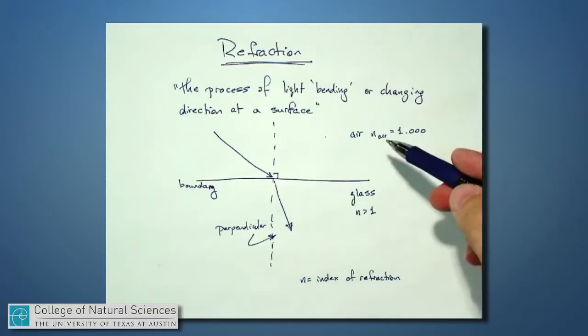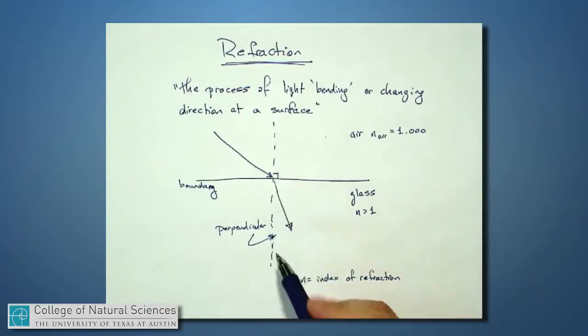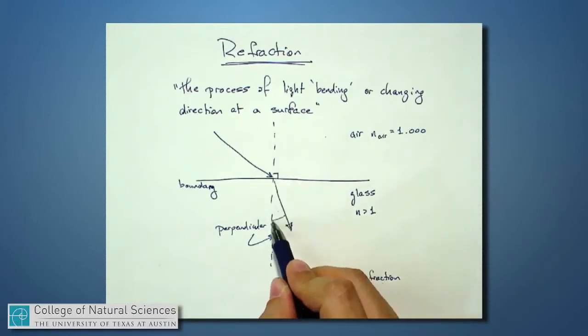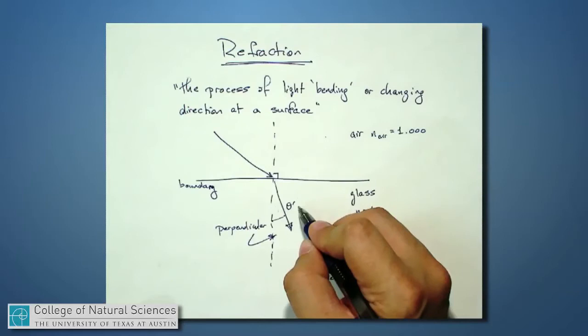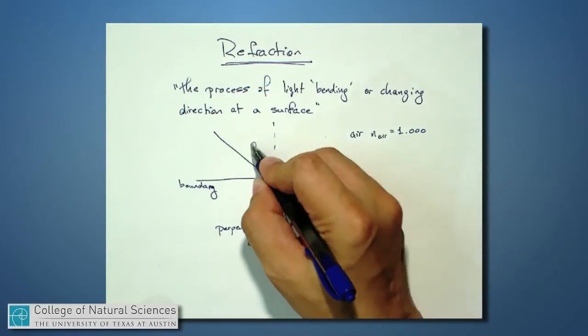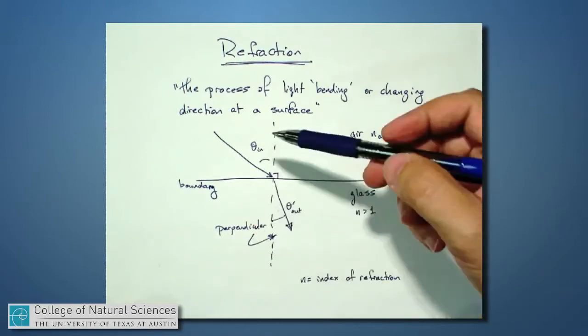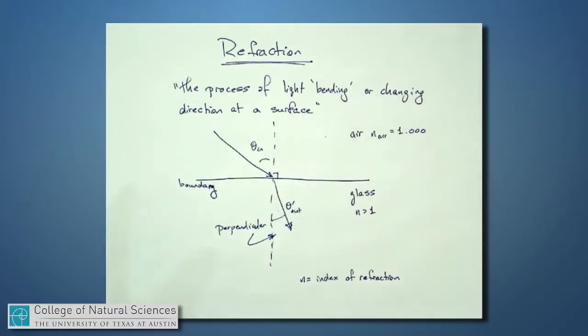But as we go from a low index material to a high index material, we will notice that the light bends toward the perpendicular, and we'll call this angle theta prime, or maybe it's best to call it theta out. This angle we'll call theta in. By that, we mean the light coming into this boundary and the light leaving this boundary theta out.